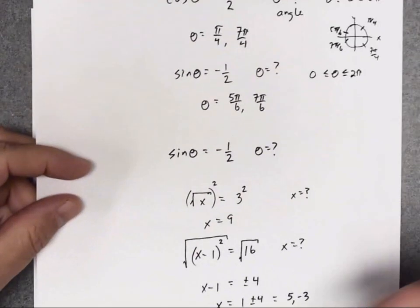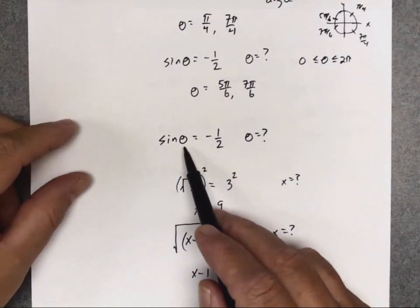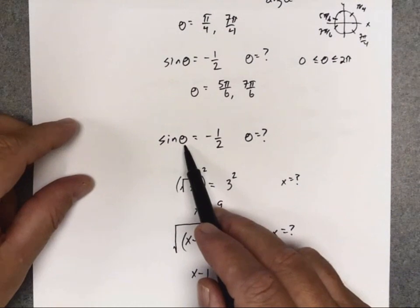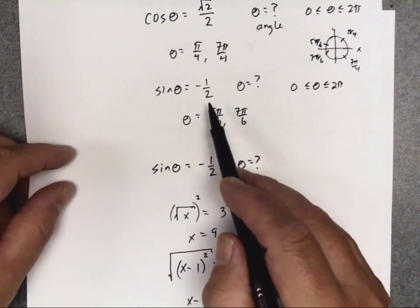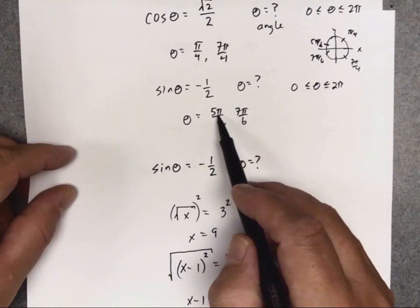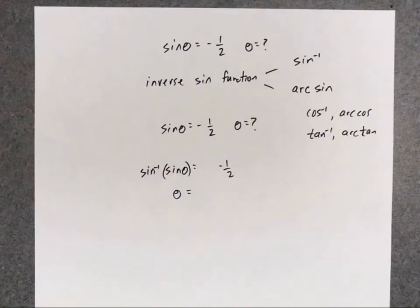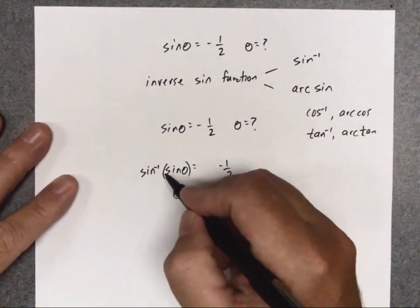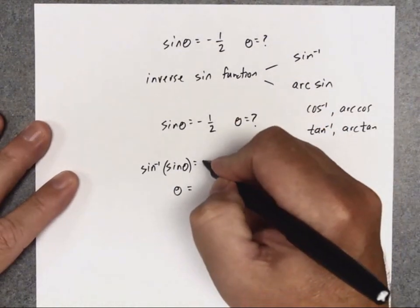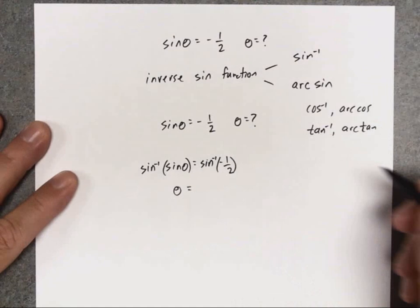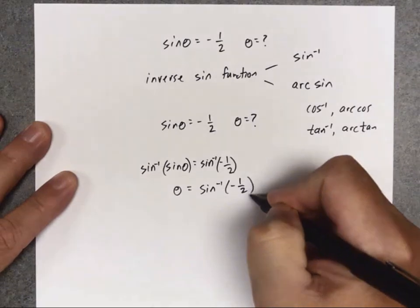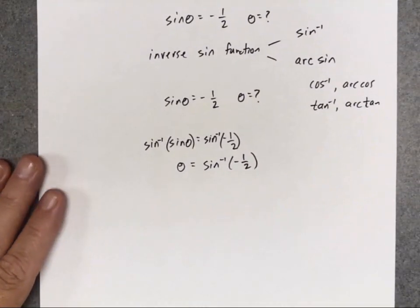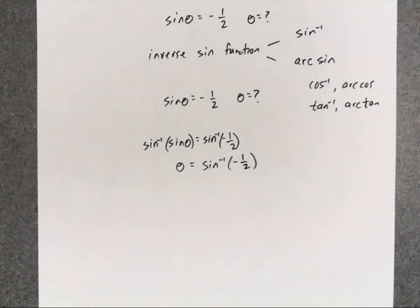This is almost like a mathematical, algebraic way to solve for the angle theta. When we did this before, we just thought about it using common sense and realized the answers had to be 5π/6 and 7π/6. Here, we're doing it more like solving an algebra equation. So I took the inverse sine of both sides, and now theta equals the inverse sine of negative 1/2.